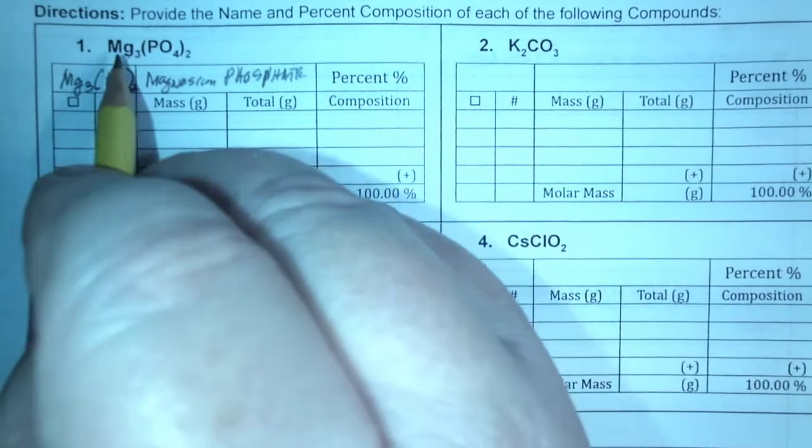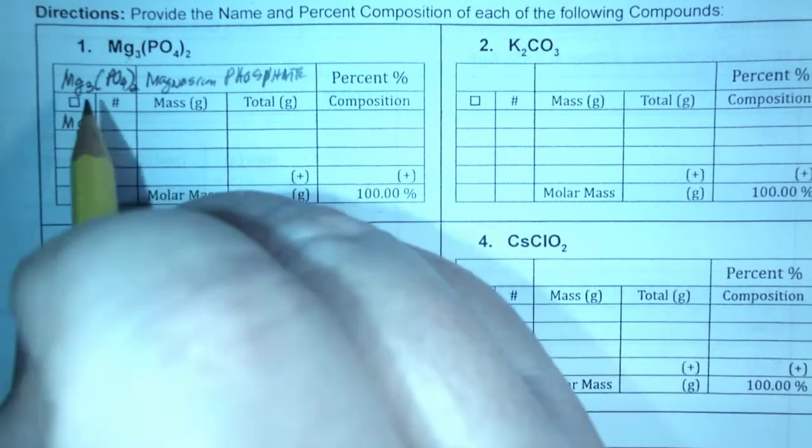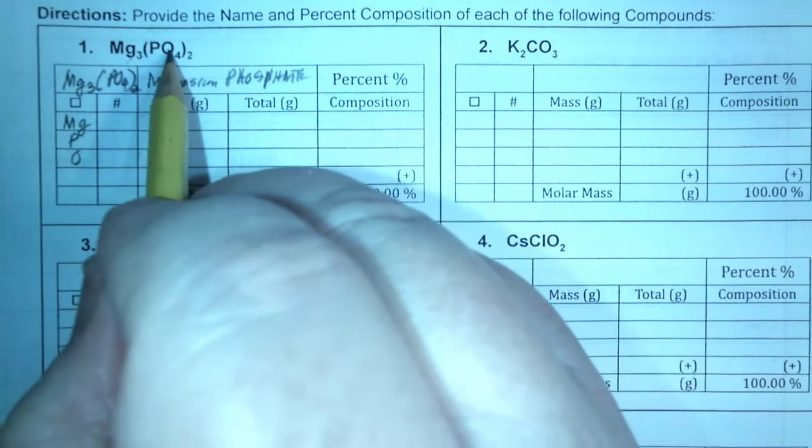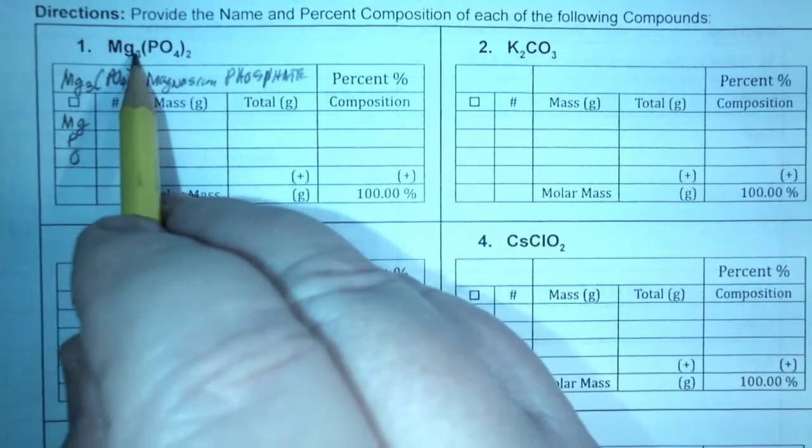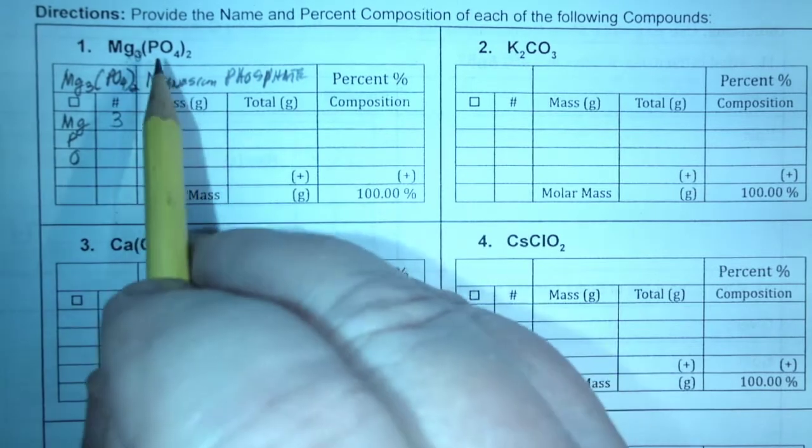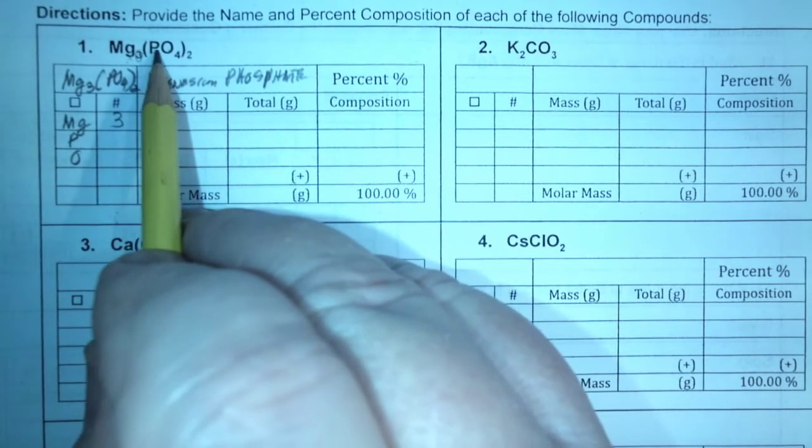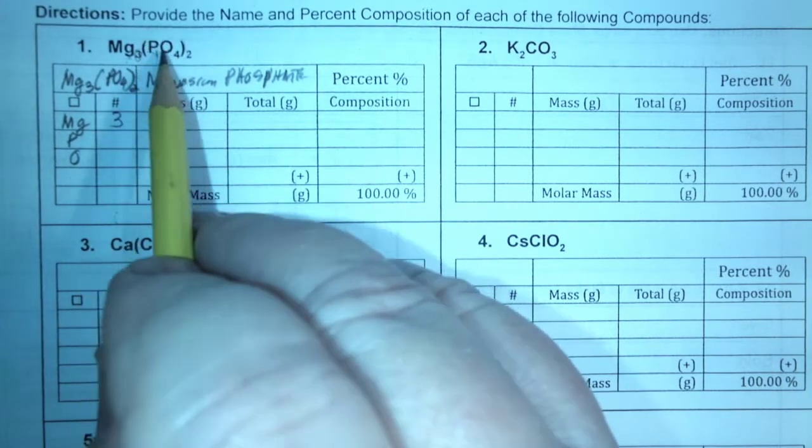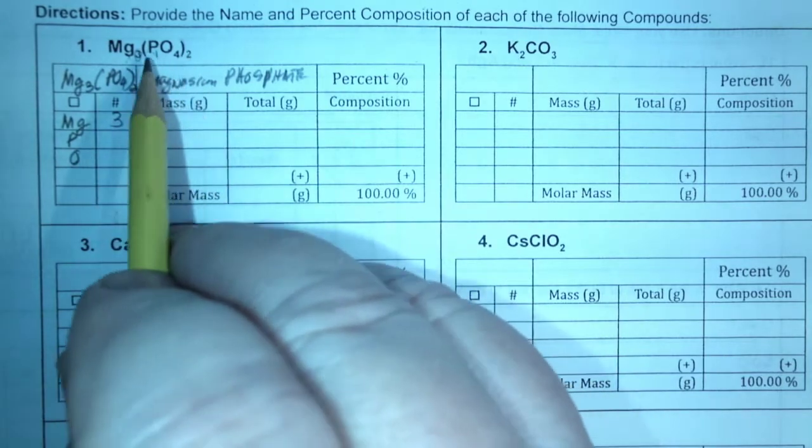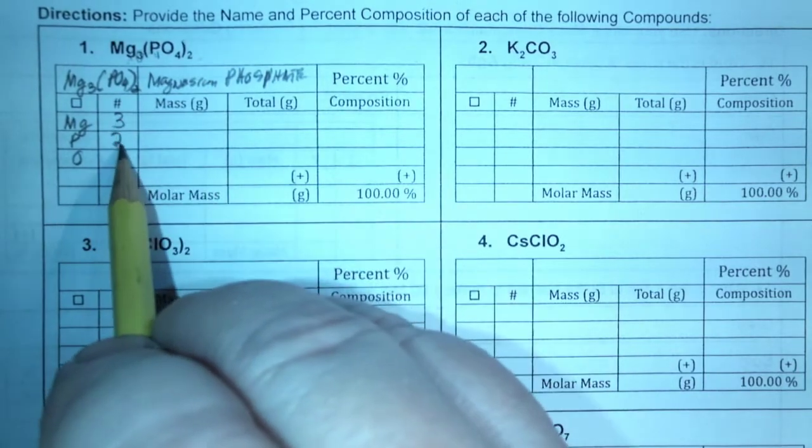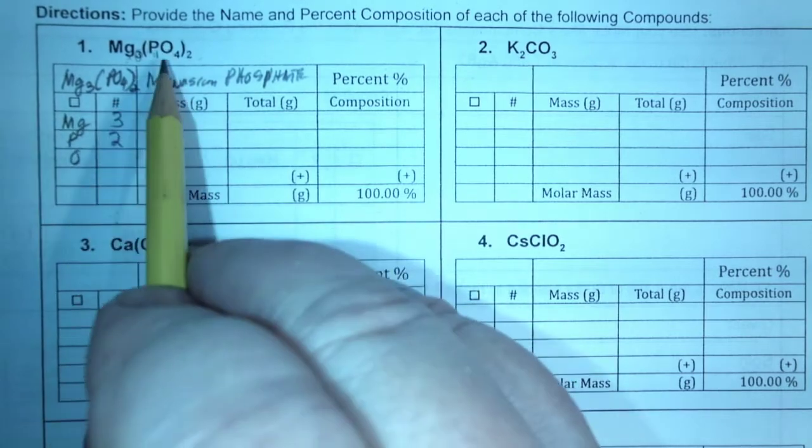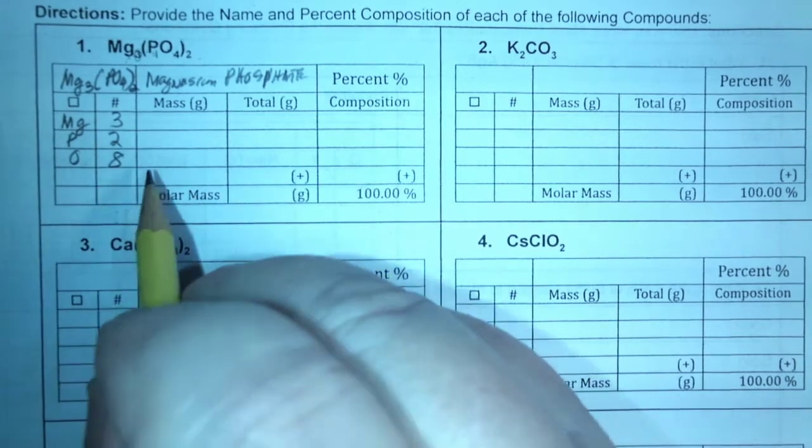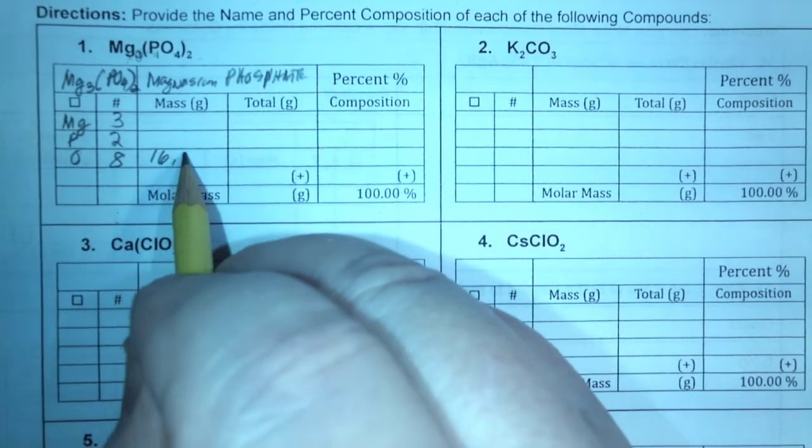Okay, so again, look at that MG, P, and O. Okay, those are the only three. And how many MGs? Well, obviously, it's three. So you write three. Now, the P, one times two, because this is outside, so there are actually two of these groups. So one times two is two. And again, how many oxygen? Four times two is eight. And that's the hard part.